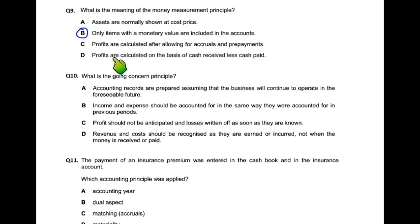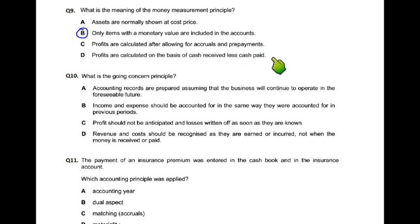Profits are calculated on the basis of cash received less cash paid — this is cash accounting. Cash accounting cannot normally be used by larger businesses. It can be used by small businesses, for example a tuck shop, where sales are recorded only when cash is received.